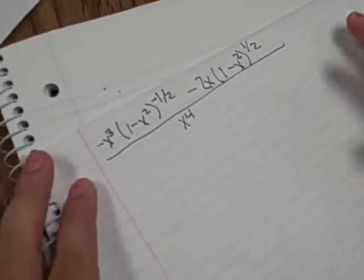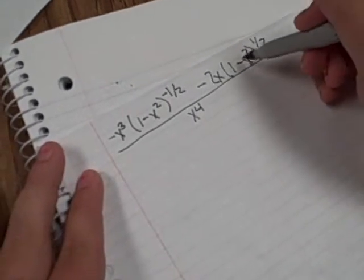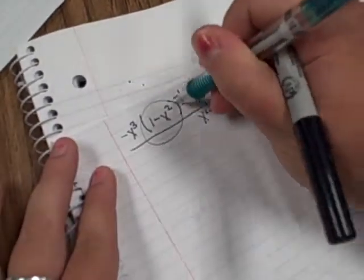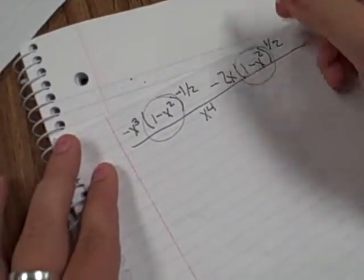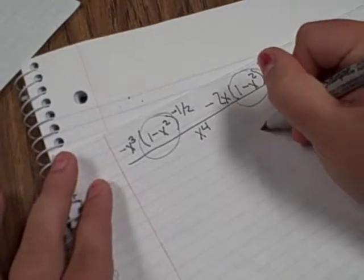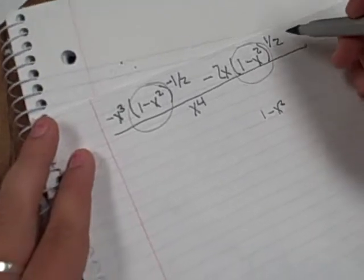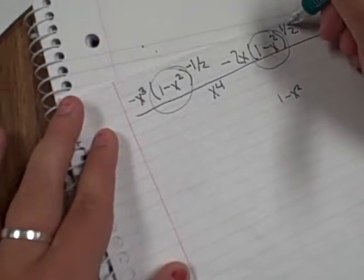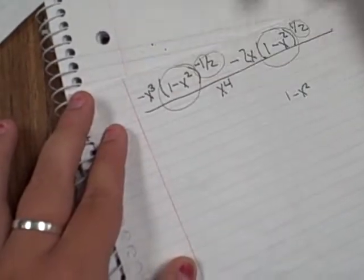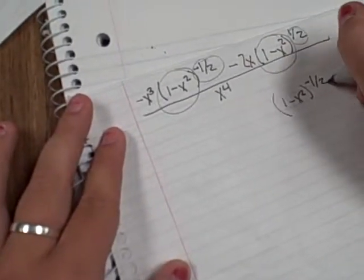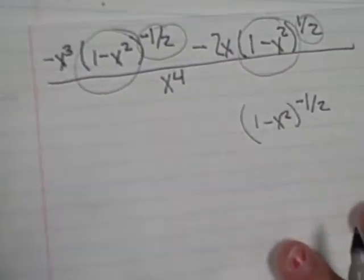Now what you do is you find your like term, and in this case it is 1 minus x squared. So you write that out—you have 1 minus x squared—and then after you do that, you take the lowest exponent, and in this case it's negative one half, if you can read my writing.